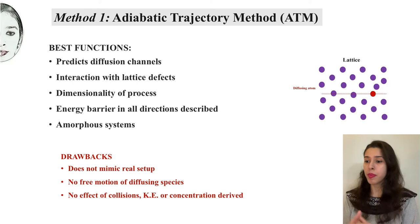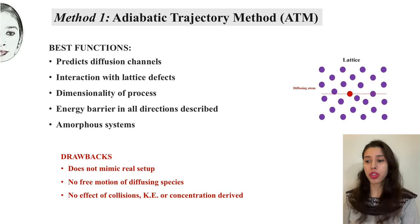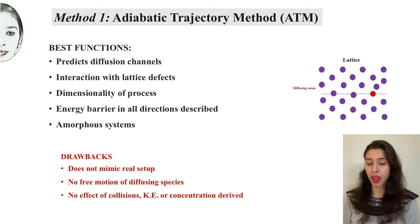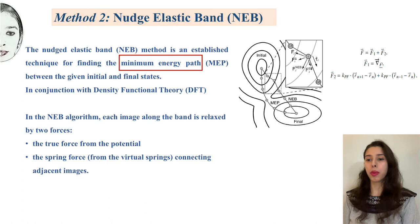This method might be good to predict diffusion channels, how the diffusing atom is interacting with defects and vacancies, and it can be good to understand dimensionality and energy barriers. However, it does not really mimic the real setup. In a real setup, atoms are free to diffuse with free motion, but in ATM, atoms are not allowed free diffusion. We also do not see the correct effect of collisions or concentration on the diffusion of the atom.